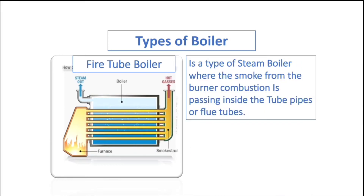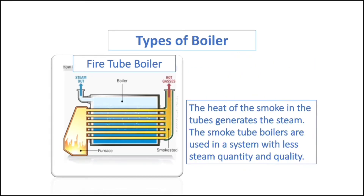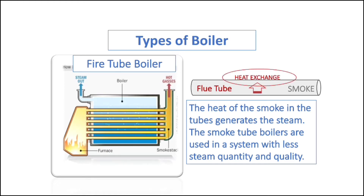The fire tube boiler is a type of steam boiler where the smoke from the burner combustion passes through the flue tube pipes. These pipes are surrounded by the boiler water, and it is where most of the heat transfer happens to increase the boiler water temperature to boiling point. The heat of the smoke in the tubes is transferred to the boiler water that surrounds the flue tubes and generates steam. The smoke tube or fire tube boiler is used in systems with less steam quantity and quality.